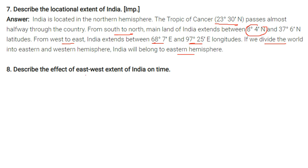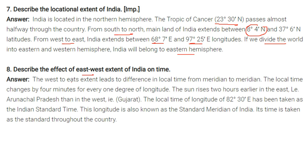Describe the effect of the east-west extent of India on time. The west-to-east extent leads to a difference in local time from meridian to meridian. Local time changes by 4 minutes for every 1 degree of longitude, so the sun rises 2 hours earlier in the east (Arunachal Pradesh) than in the west (Gujarat). The longitude of 82 degrees 30 minutes east has been taken as the Indian Standard Time, also known as the Standard Meridian of India, and its time is used as the standard throughout the country.